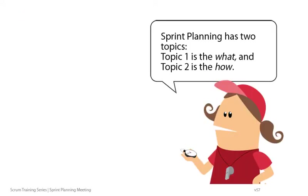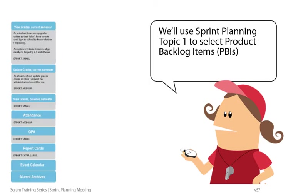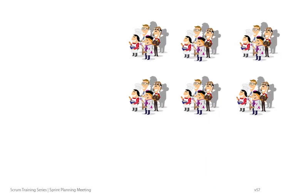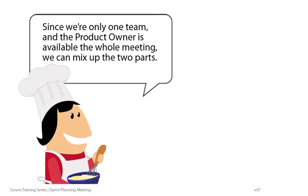Sprint Planning has two topics. Topic 1 is the What, and Topic 2 is the How. We'll use Sprint Planning Topic 1 to select PBIs and Sprint Planning Topic 2 to come up with tasks. If we add multiple teams, we do Topic 1 together with the shared Product Owner and Topic 2 in the breakout groups for each team. Since we're only one team and the Product Owner is available for the whole meeting, we can mix up the two parts.